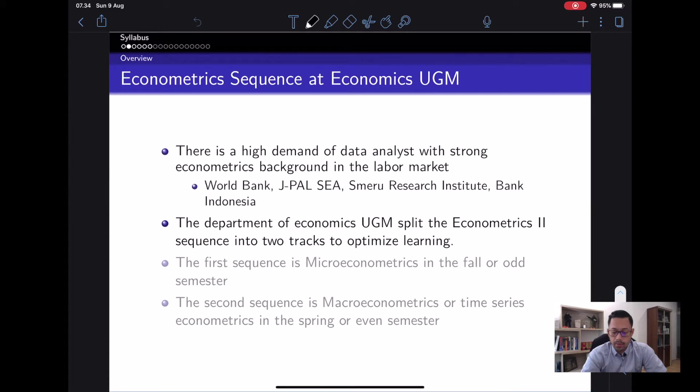The Department of Economics UGM has split the econometrics sequence into two tracks to optimize learning. The first sequence is microeconometrics in the fall or odd semester, and the second sequence is macroeconometrics or time series econometrics in the spring or even semester.